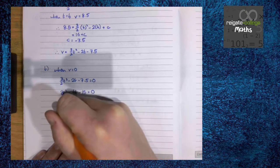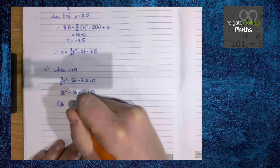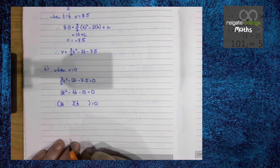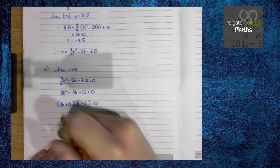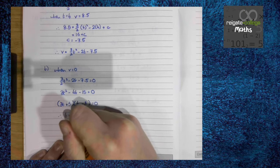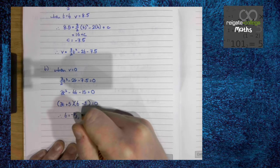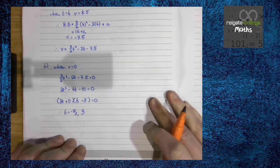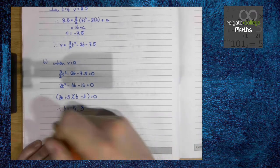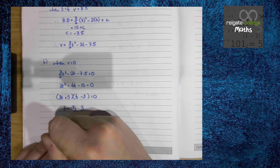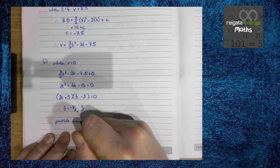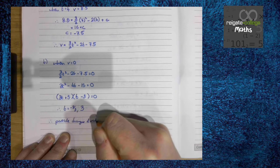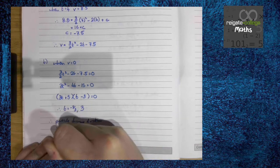Factorizing, we're going to have 3t and t, and then we're going to have plus 5 and minus 3. So therefore, t is minus 5 over 3 and 3. Now obviously, time can't be negative, so the particle changes direction when t equals 3.